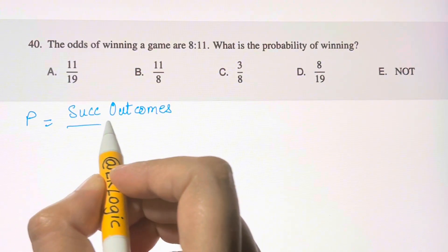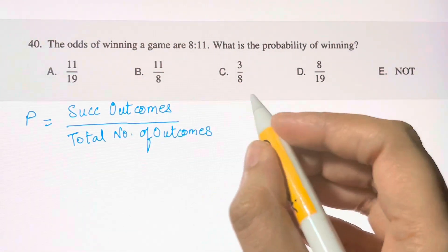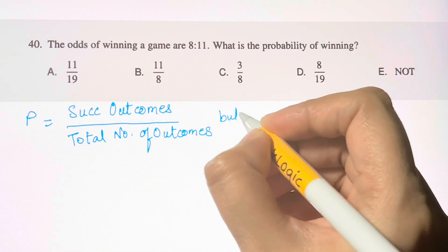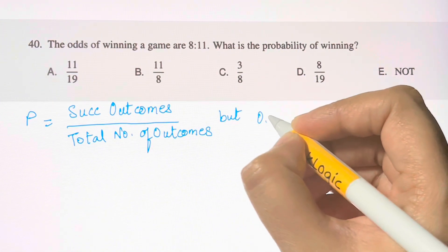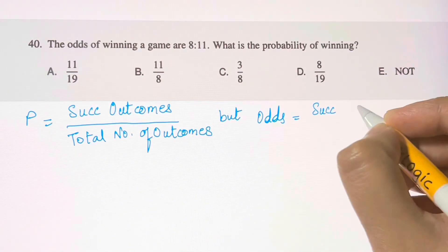But odds is given by successful outcomes divided by unsuccessful outcomes.